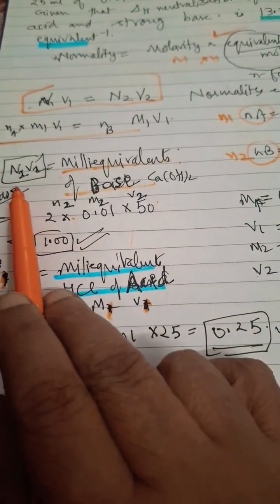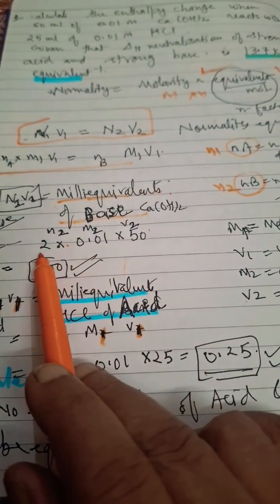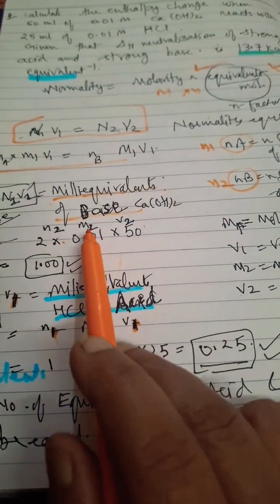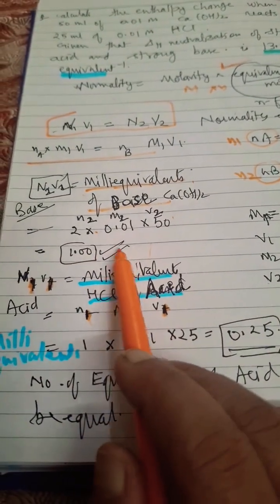Here milliequivalents of base will be calculated. N-factor for calcium hydroxide is 2, so N2 = 2, molarity is 0.01, volume is 50 ml, so the answer will be 1 milliequivalent of base calcium hydroxide.